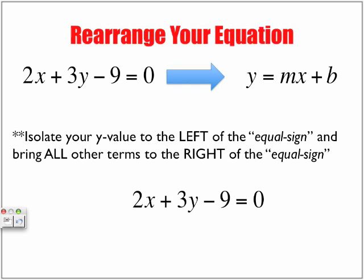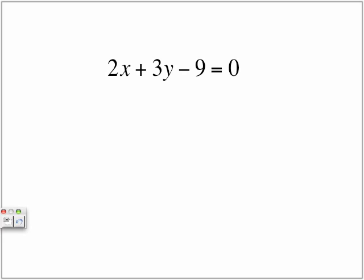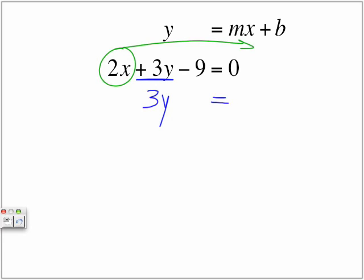We have 2x plus 3y minus 9 equals 0. We want to write it in the format y equals mx plus b. Notice here I've rewritten the equation to fit in line with our y value. So we want to keep this 3y on this side of the equal sign and bring everything else to that side of the equal sign.